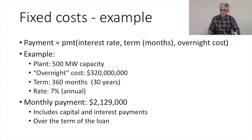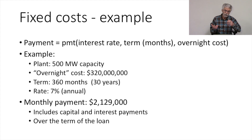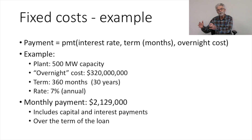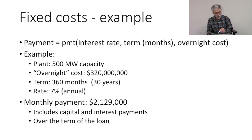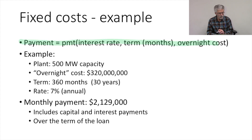Once we know the interest rate, the capital cost amount, and the term of the loan, it's a very simple matter to calculate the monthly payment. We can go right to our spreadsheet and plug those values into a payment function. That payment function will calculate the monthly payment required to pay back the loan with interest over the term of the contract. So we plug in the interest rate, the term in months, and the overnight cost. Let's do an example.